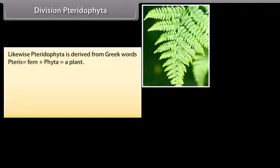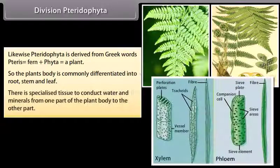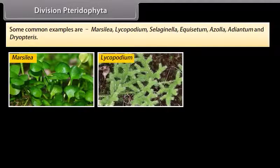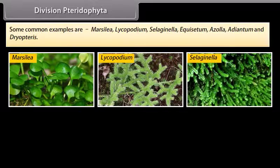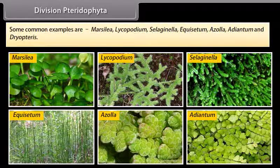Division Pteridophyta: Pteridophyta is derived from Greek words 'pteris', meaning fern, plus 'phyta', meaning plant. The plant body is commonly differentiated into root, stem, and leaf. There is specialized tissue to conduct water and minerals from one part of the plant body to another. Some common examples are Marsilia, Lycopodium, Selaginella, Equisetum, Azolla, Adiantum, and Dryopteris.